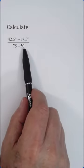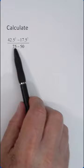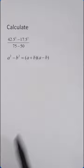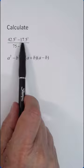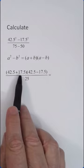Calculate this expression. If you are not allowed to use a calculator, doing this by hand would be a pain in the neck. So let's try to use factoring in the numerator, which would be 42.5 plus 17.5 multiplied by 42.5 minus 17.5.